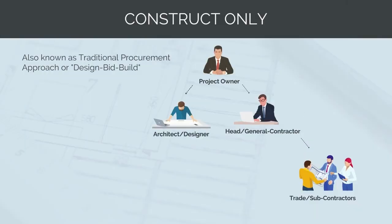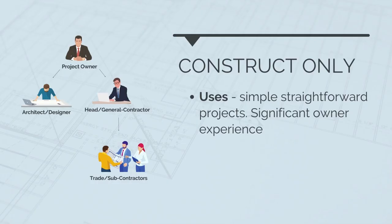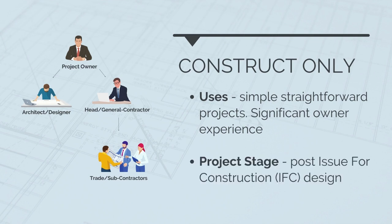The construct-only model is often referred to as the traditional procurement approach or design-bid-build model. In this model, the project owner directly engages a designer to develop an issue-for-construction drawing set, then runs a competitive tender between multiple head contractors who quote to deliver the works for a fixed fee based on the IFC design. The head contractor is engaged for the construction scope only. Construct-only contracts are generally used for simple, straightforward projects where there is not a lot of uncertainty — typically building construction, which has been done thousands of times and has few unknowns compared to civil infrastructure. The owner will need significant experience and expertise to manage the design process themselves. The contractor is then engaged after the issue-for-construction drawing set is ready and is not involved in the design stage at all.